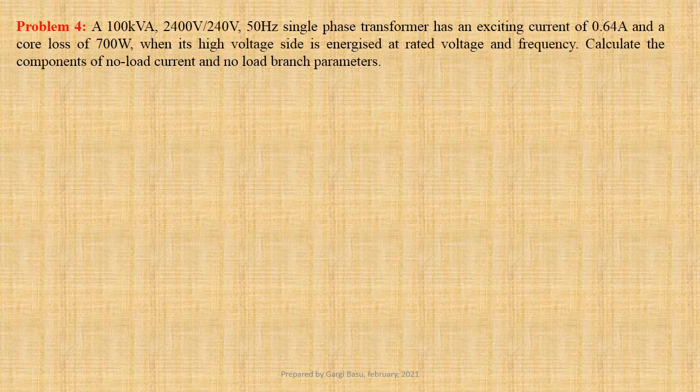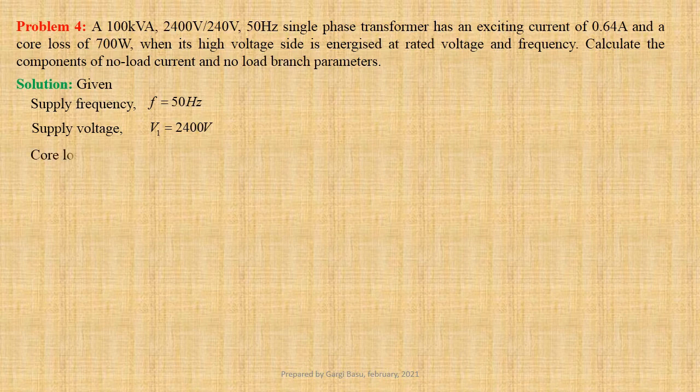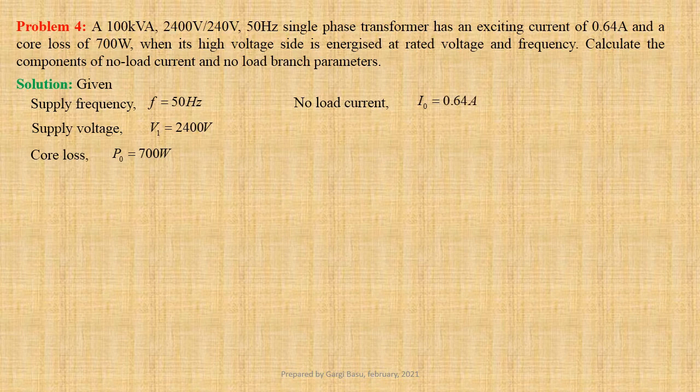Problem number 4: A 100 kVA 2400 Volt by 240 Volt 50 Hertz single-phase transformer has an exciting current of 0.64 Ampere and a core loss of 700 Watts when its high voltage side is energized at rated voltage and frequency. We have to calculate the components of no load current and no load branch parameters. Supply frequency F equals 50 Hertz. Supply voltage V1 equals 2400 Volts. Core loss P0 equals 700 Watts. No load current I0 equals 0.64 Ampere.